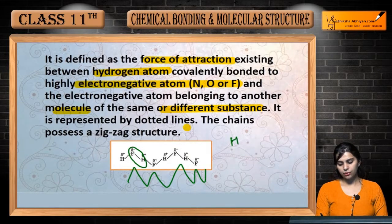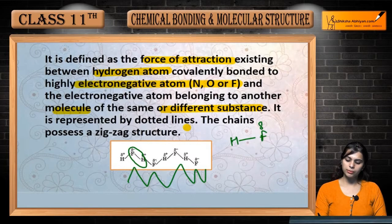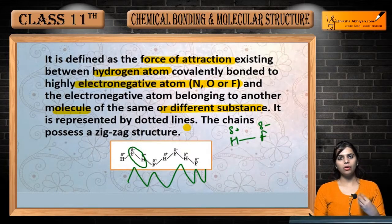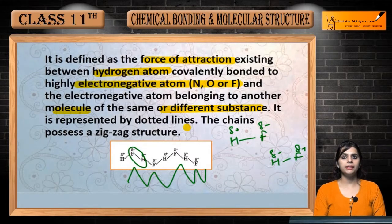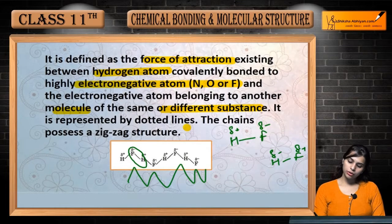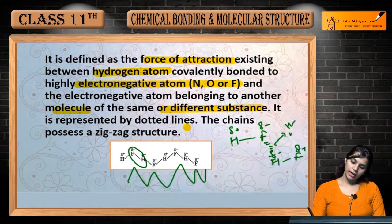This is Hydrogen and Fluorine. We know that Fluorine is electronegative, so it will carry a negative charge, and Hydrogen will carry a partial positive charge. This is another Hydrogen Fluoride molecule — negative charge and positive charge. Since opposite charges attract, they will bond together, forming H bonding — Hydrogen bonding.